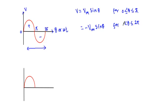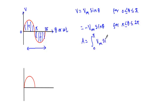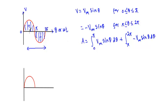To calculate the area over a full cycle, we add the areas of both half cycles. The area equals the integration of Vm sin(θ) dθ from 0 to π, plus the integration of minus Vm sin(θ) dθ from π to 2π. This gives the total area under the complete cycle of the sine waveform.